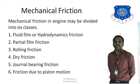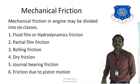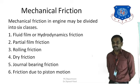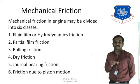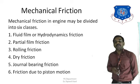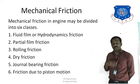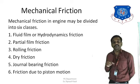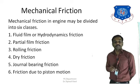Mechanical friction is divided into six categories. The first is fluid-film or hydrodynamic friction, which occurs when there is sufficient lubricant in the engine — also known as viscous drag. Higher fluid viscosity means higher friction. The second is partial-film friction, which occurs when there is no complete lubricant film between two components, causing direct contact and increased friction. This also occurs in crankshaft journal bearings during low velocity, such as when the engine is starting or stopping, when a proper film has not yet formed.